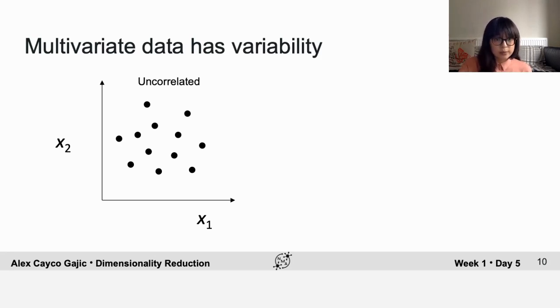On the other hand, you might see uncorrelated data where one neuron has much higher variability than the other neuron. So in this case, you can see that the direction of most of the variance of the data is along the axis corresponding to neuron 1.